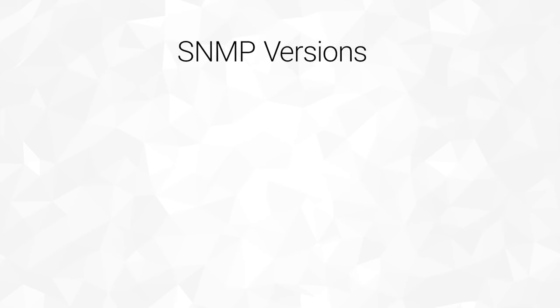The MIB file should be provided by the device manufacturer and uploaded to the Manager in order to decipher received data. The MIB does not come natively with the agent itself. SNMP has three common versions: version 1, 2C, and 3.